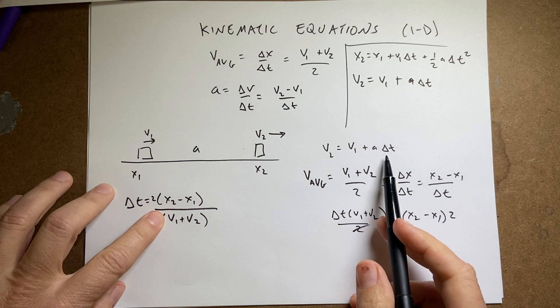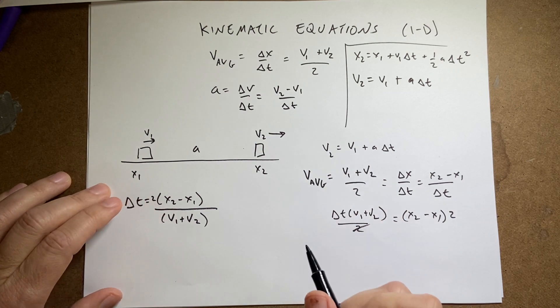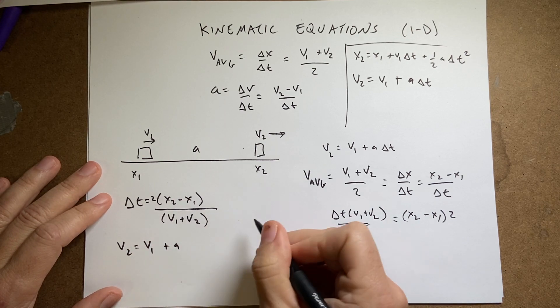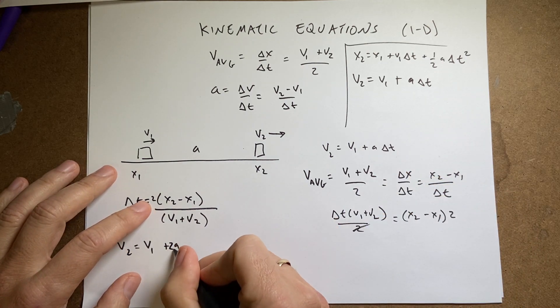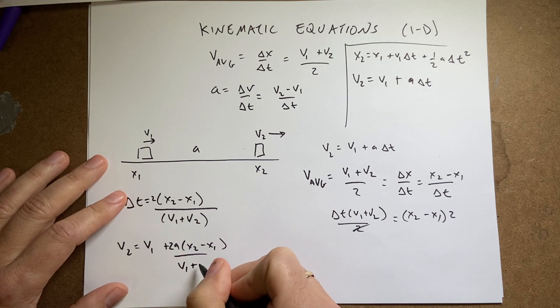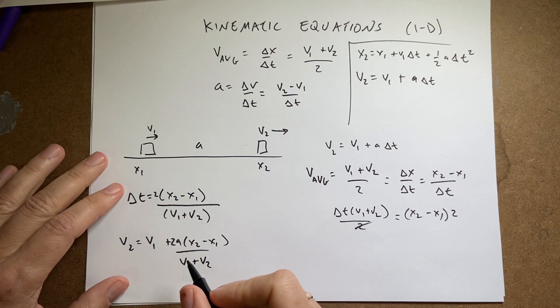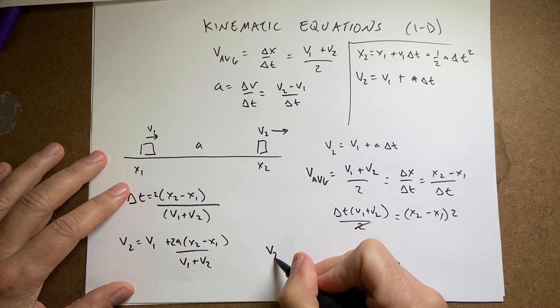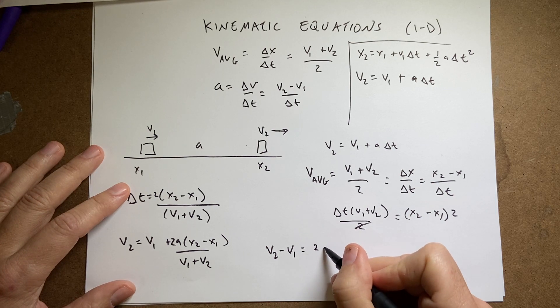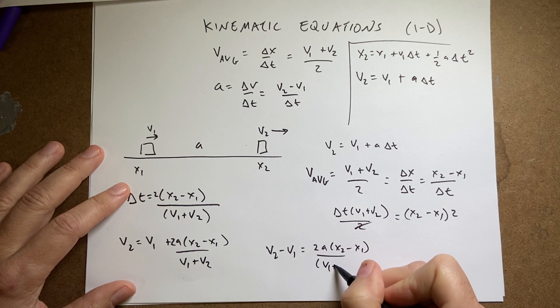Now I can put that into this equation over here. So let's do that. And actually I'm going to, yeah let's do that. So I get v2 equals v1 plus a. Now instead of delta t I'm going to have this. So I have 2 x2 minus x1 over v1 plus v2. Now I'm going to subtract v1 from both sides and I get v2 minus v1 equals 2 a x2 minus x1 all that over v1 plus v2.